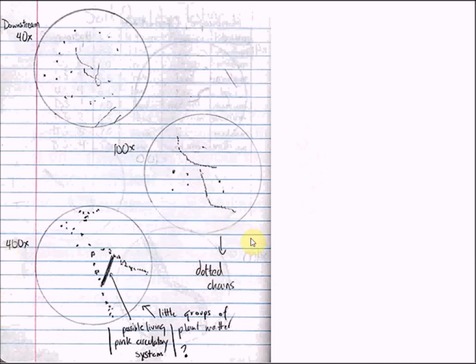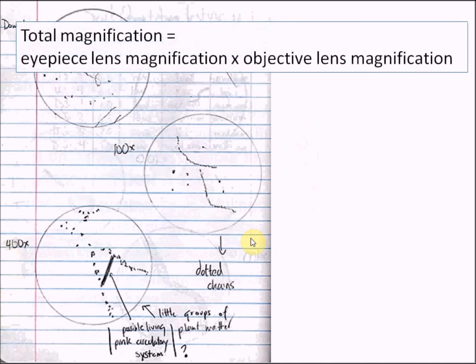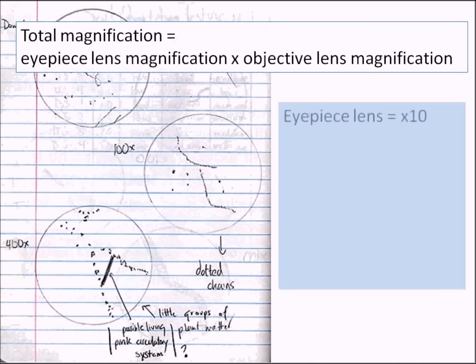So how do we figure out magnification? You use a simple calculation: the total magnification equals the eyepiece lens magnification multiplied by the objective lens magnification. The eyepiece lens is usually times 10 magnification.